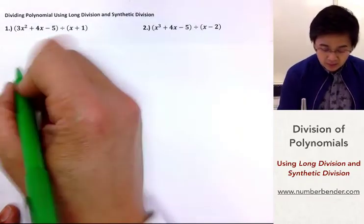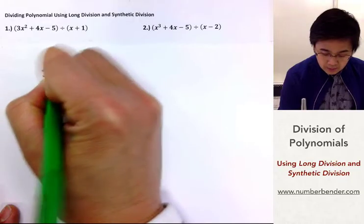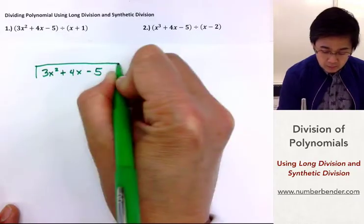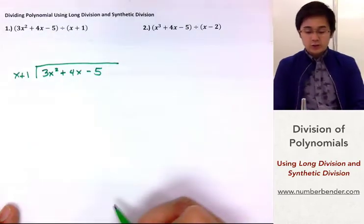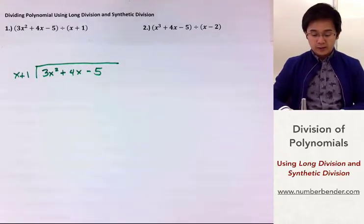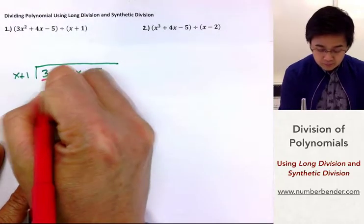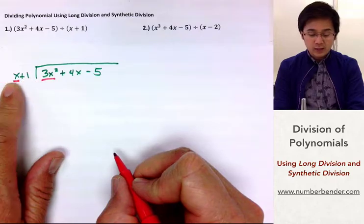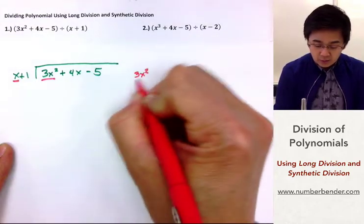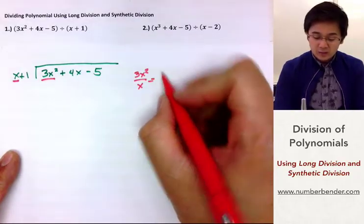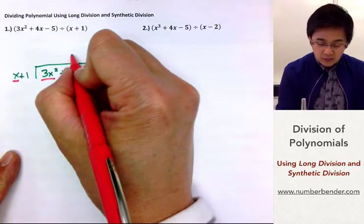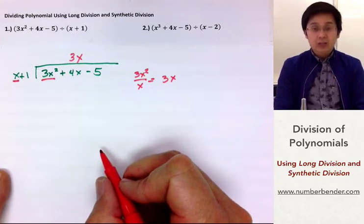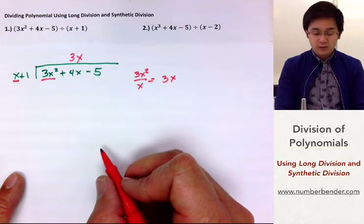For the first problem, we are dividing 3x squared plus 4x minus 5 by x plus 1. By long division, what we're going to be doing is dividing the first term by x. So you will ignore the constant and just focus on 3x squared all over x. And 3x squared divided by x is 3x. We're going to write it out in line with the 4x term with the same exponent. Then, just like long division, we're going to multiply it back to our divisor, which is x plus 1.